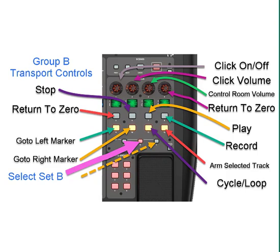Our eight buttons will go as follows. Button 5 will be return to zero. Button 6 will be our stop button. Button 7 will be play. Button 8 will be record. Button 9 will be jump to the left marker. Button 10 will be jump to the right marker. Button 11 will be cycle — you can turn that on and off. And button 12 will arm record the selected track, so you select the track and hit that to get ready to record.